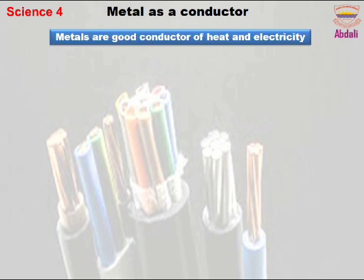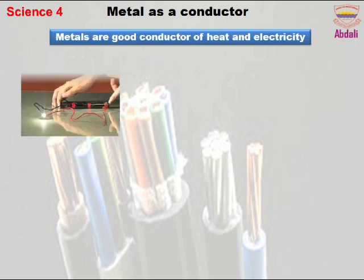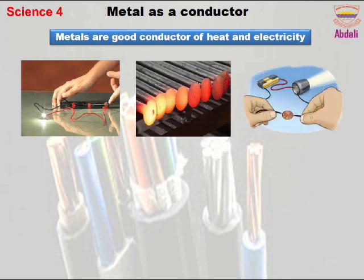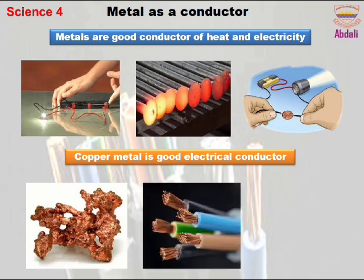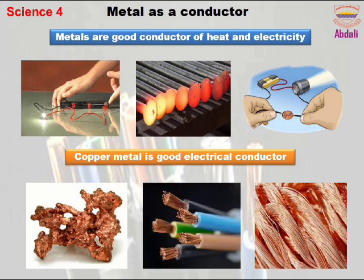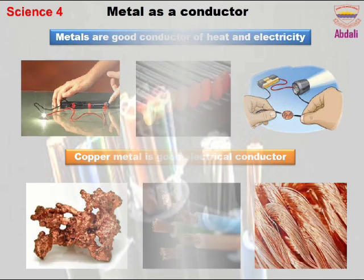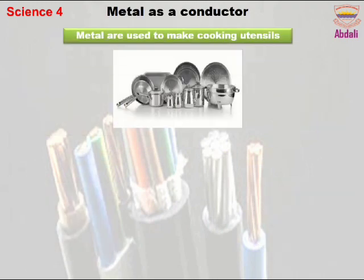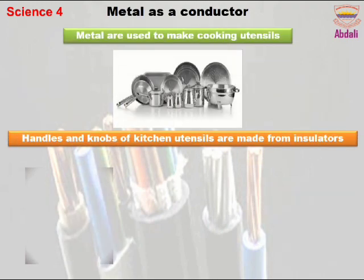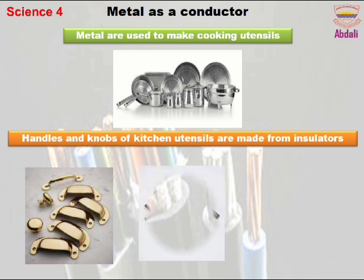Let's explore how metals are used as conductors. Metals are good conductors of heat and electricity; they can easily pass heat and conduct electricity. Copper metal is a good electrical conductor. Metals are used to make cooking utensils. Handles and knobs of kitchen utensils are made from insulators.